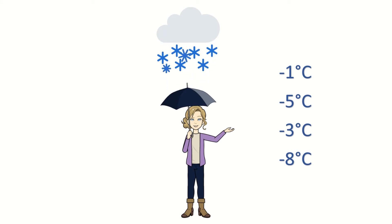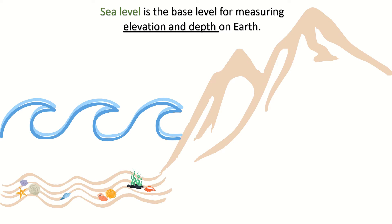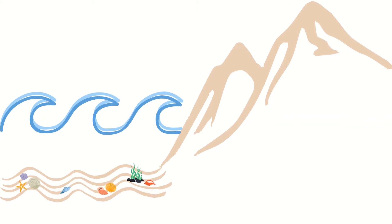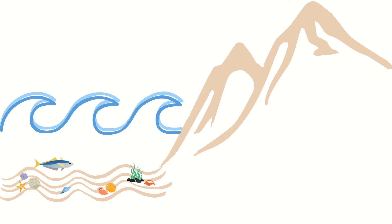But where else can we use it? On Earth, we use sea level to measure the elevation, the height, or the depth of something on Earth. Sea level is always 0 meters. For instance, let's look at this girl — she is 10 meters above sea level, so that is positive 10 meters. And let's look at this fish — this fish is 5 meters below sea level, so that is negative 5 meters.